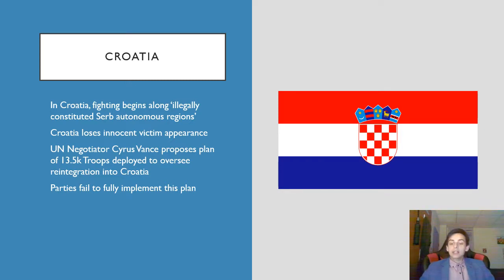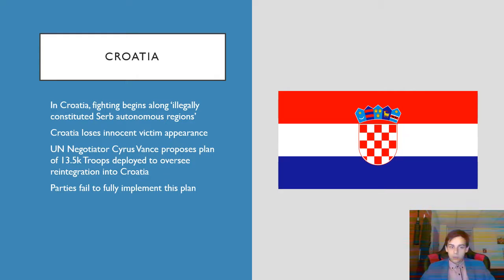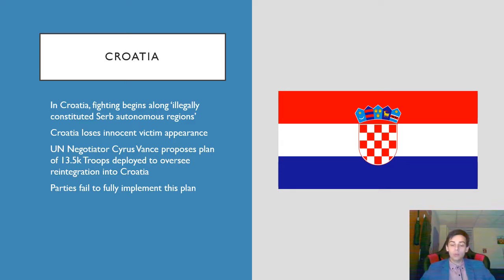However, this vision of Croatia as victim is inconsistent with their actual behavior. Franjo Tuđman and Slobodan Milošević were basically agreeing to split Bosnia between Croatia and Serbia. It's clear from this that Croatian extremists had more than just defensive goals — they had aggressive territorial ambitions on Bosnia. So they're not innocent at all on this issue.